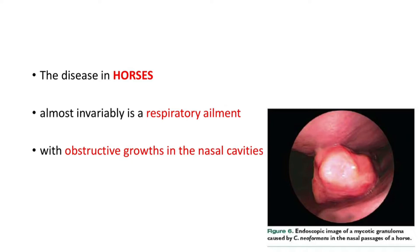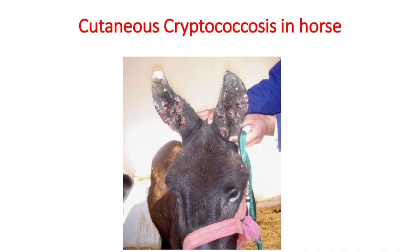In horses, cryptococcosis almost invariably is a respiratory ailment with obstructive growth in the nasal cavity. This is an endoscopic image of a mycotic granuloma caused by Cryptococcus neoformans in the nasal passage of a horse. In horses, it can also cause cutaneous lesions — this example of cutaneous cryptococcosis in a horse shows ulcerated nodules in the ears, especially on the medial side of the pinna.